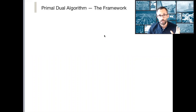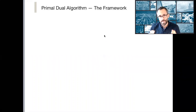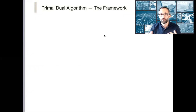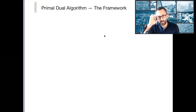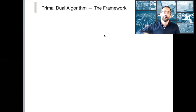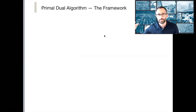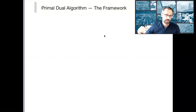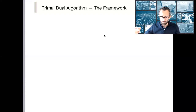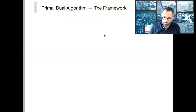We're going to talk about how we can use complementary slackness as the key tool to deriving an iterative algorithm that goes back and forth between the primal and the dual. This is the basic framework I'll describe in this lecture. We will specialize this to many different combinatorial problems: shortest path, max flow, min cut, and later a more sophisticated version, matching.